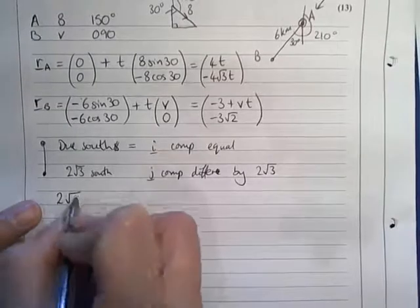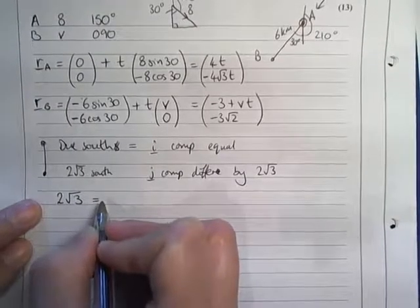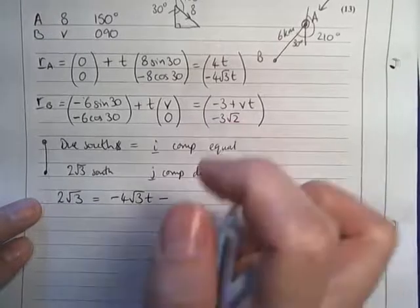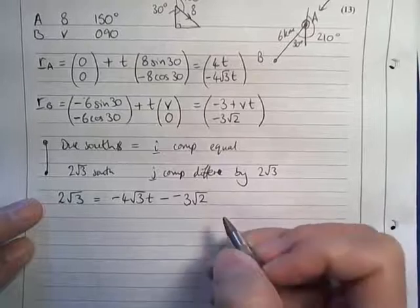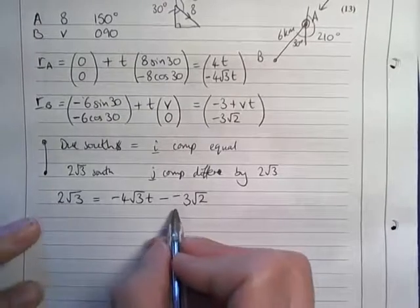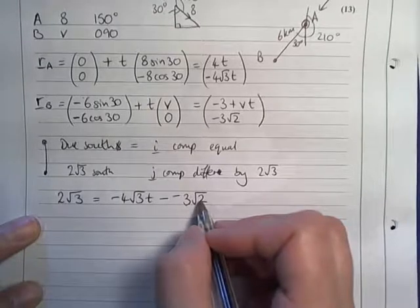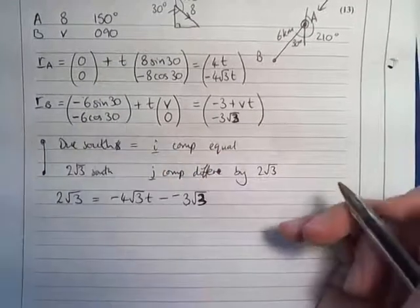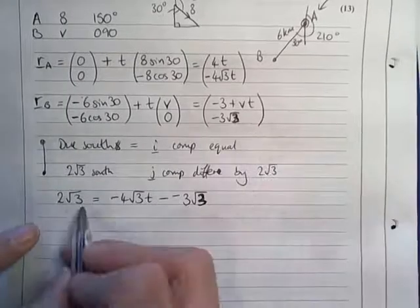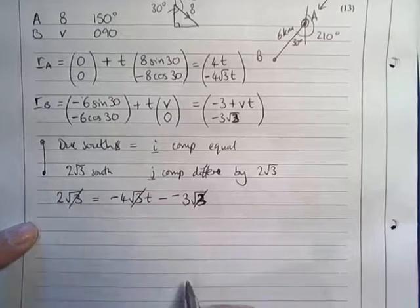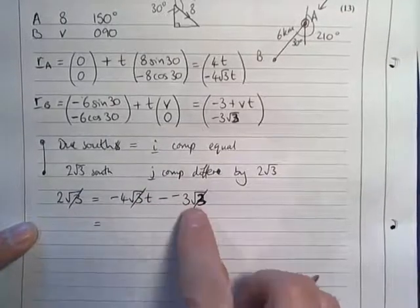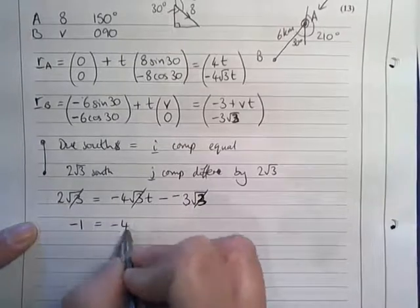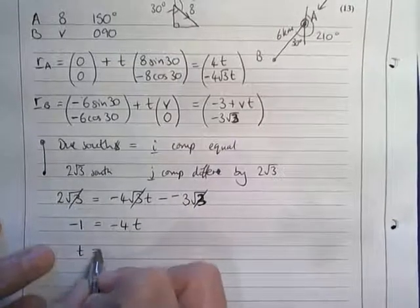I'm going to begin by using this distance of 2 root 3. So 2 root 3 is going to be equal to this minus this. Oh dear, that's a root 3, because that came from cosine 30. So here I end up with root 3s everywhere, so I can cancel everything by root 3. Here I end up with plus 3, so I shall subtract 3 from both sides and end up with negative 1 equals negative 4T, and therefore I get that T is one quarter.